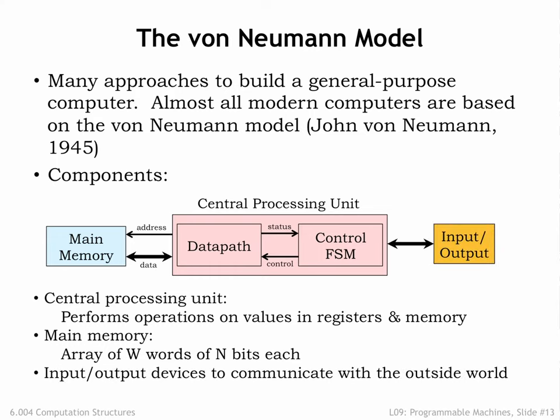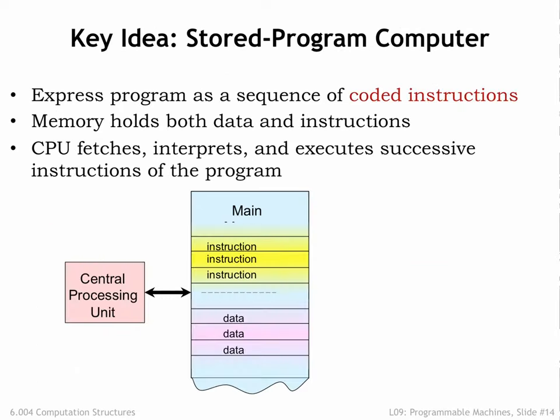And finally, there are input-output devices that enable the computer system to communicate with the outside world, or to access data storage that, unlike main memory, will remember values even when turned off. The key idea is to use main memory to hold the instructions for the CPU, as well as data. Both instructions and data are, of course, just binary values stored in main memory.